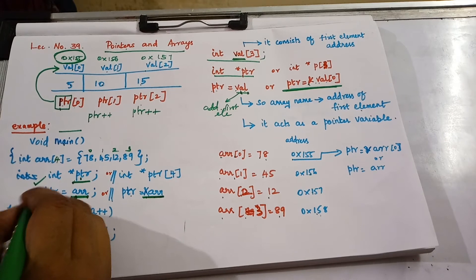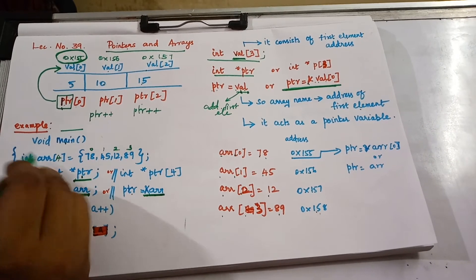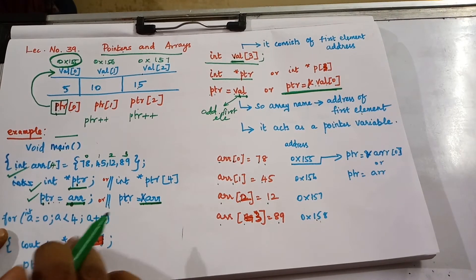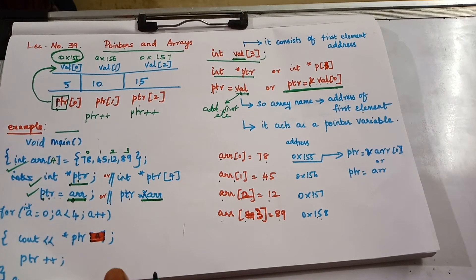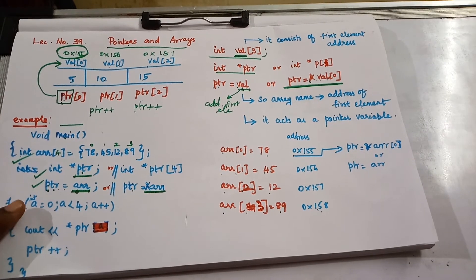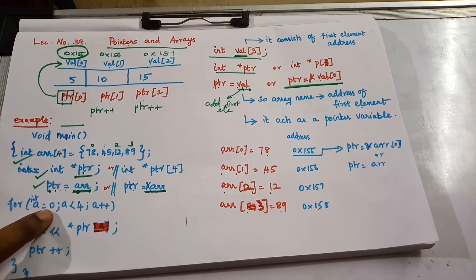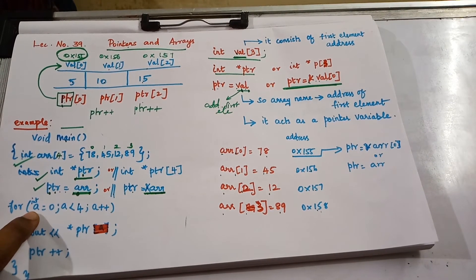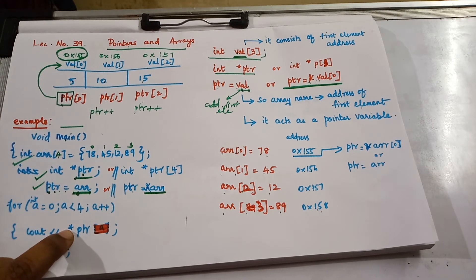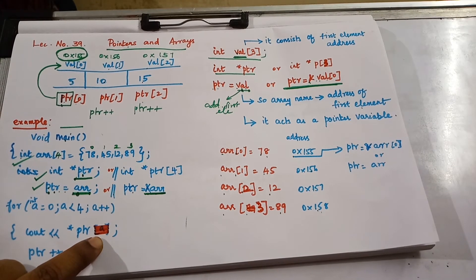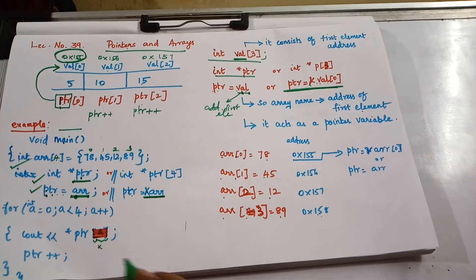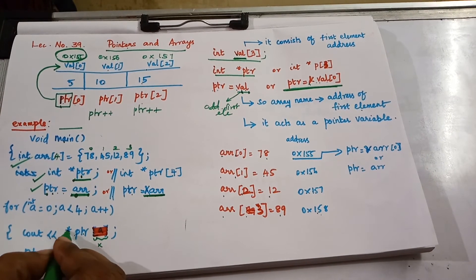Whenever using a pointer and an array, these two declaration steps are very important. Now to display the values, we use a for loop: 'for(int a = 0; a < 4; a++)'. We print using 'cout << *ptr' — no index needed because pointer and array are declared separately, so just use '*ptr' (dereference operator with ptr).